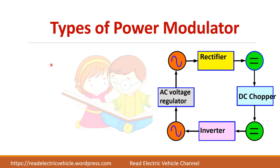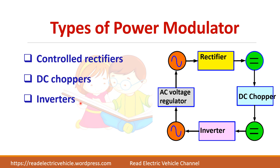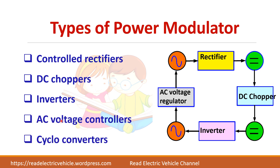There are different types of power modulators. For AC to DC conversion, rectifiers are used. For DC to DC, choppers are used. Inverters are used for DC to AC conversion. For AC to AC conversion, AC voltage controllers and cycloconverters are available — AC voltage controllers change the voltage magnitude, and cycloconverters change the frequency.